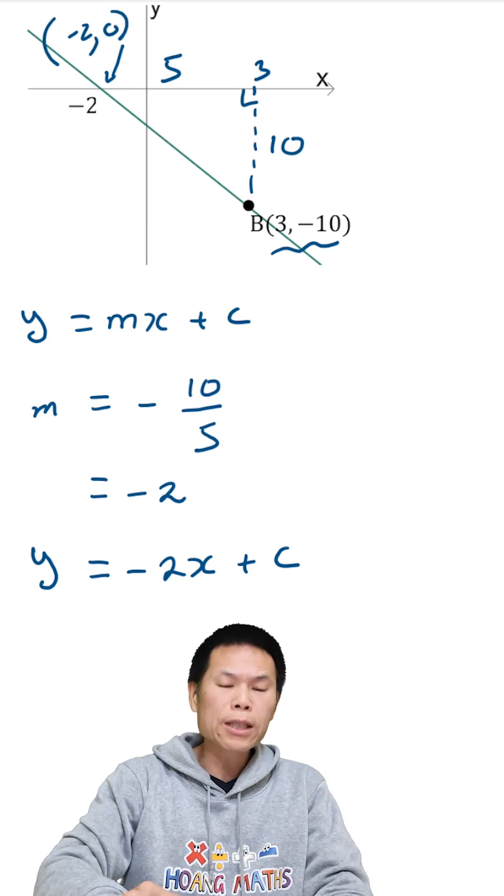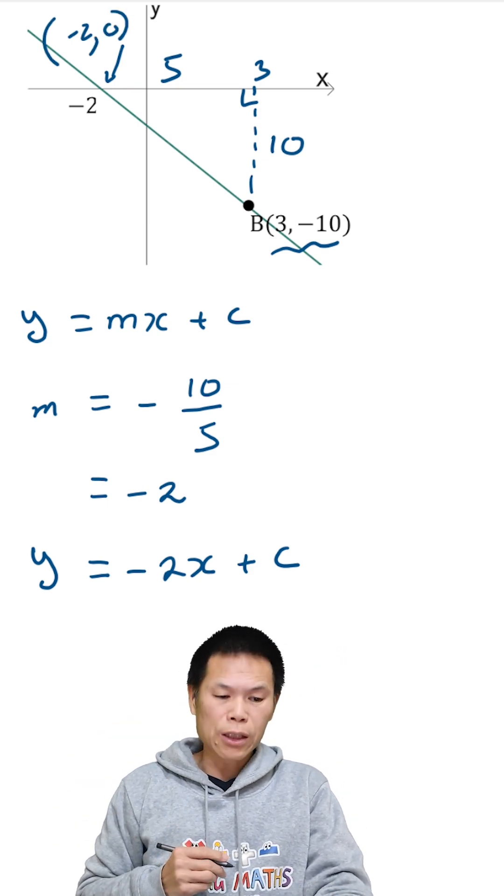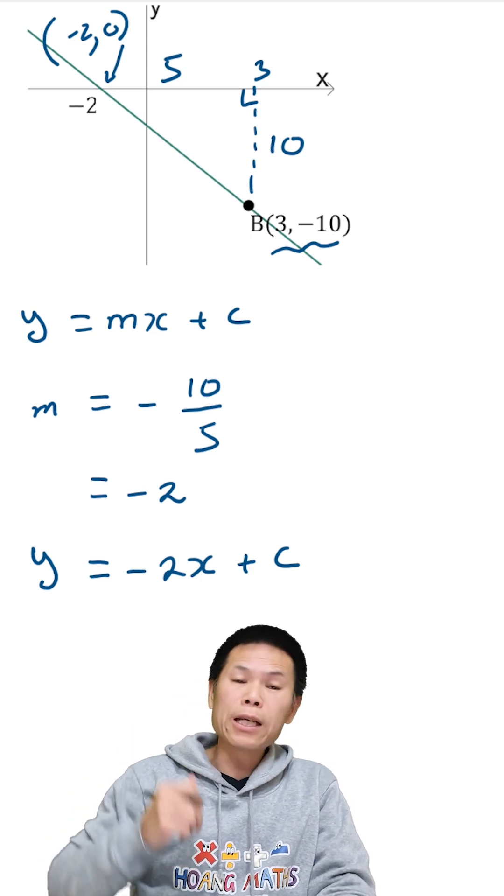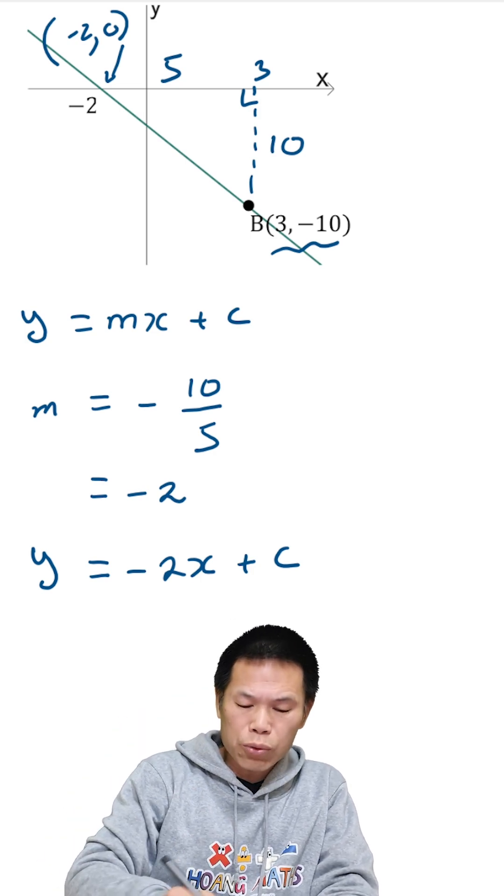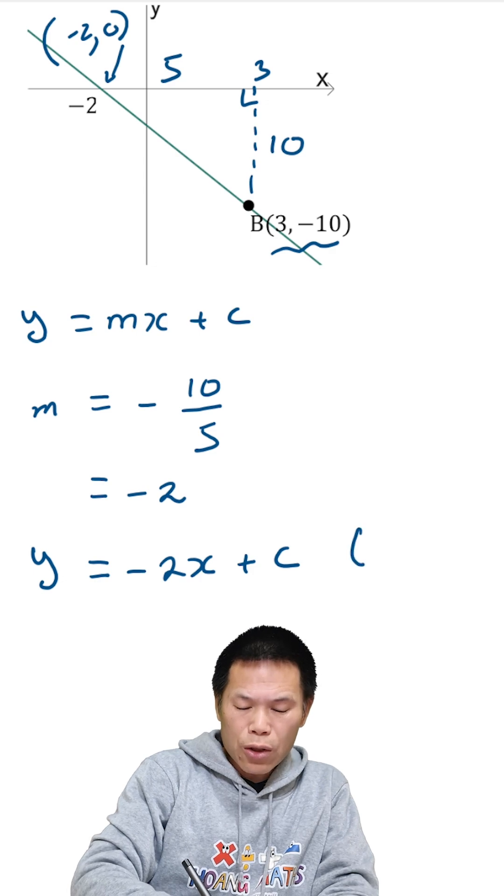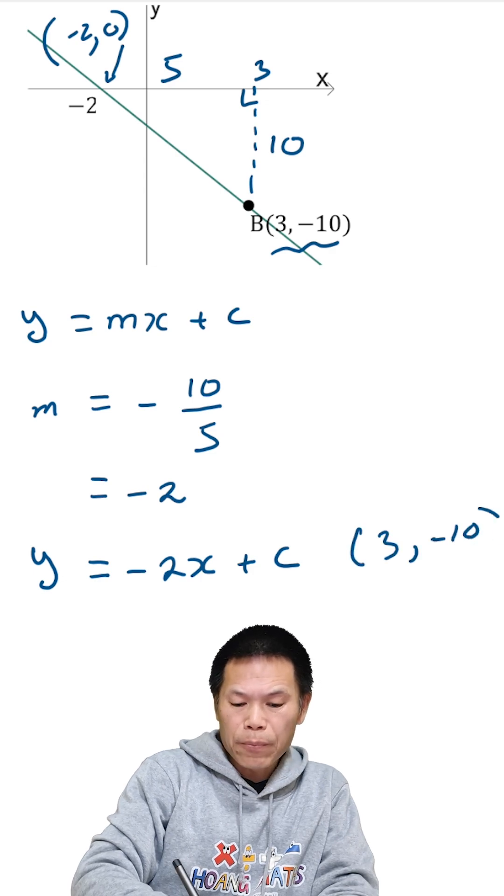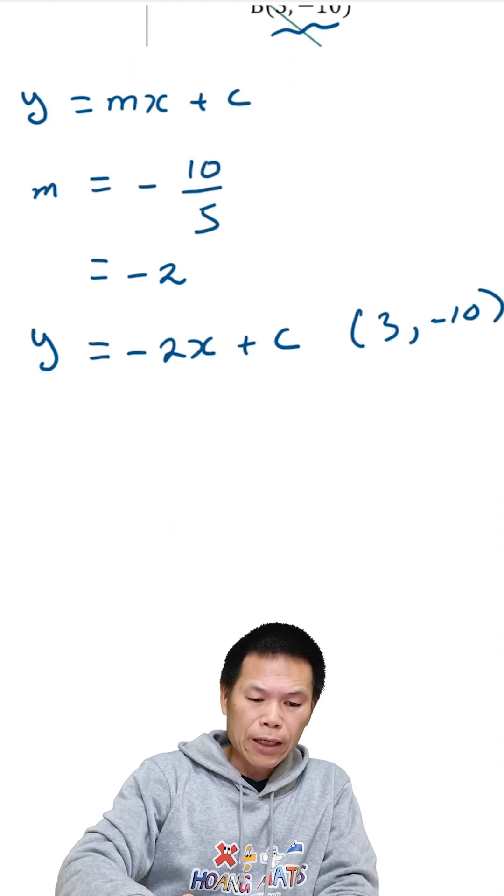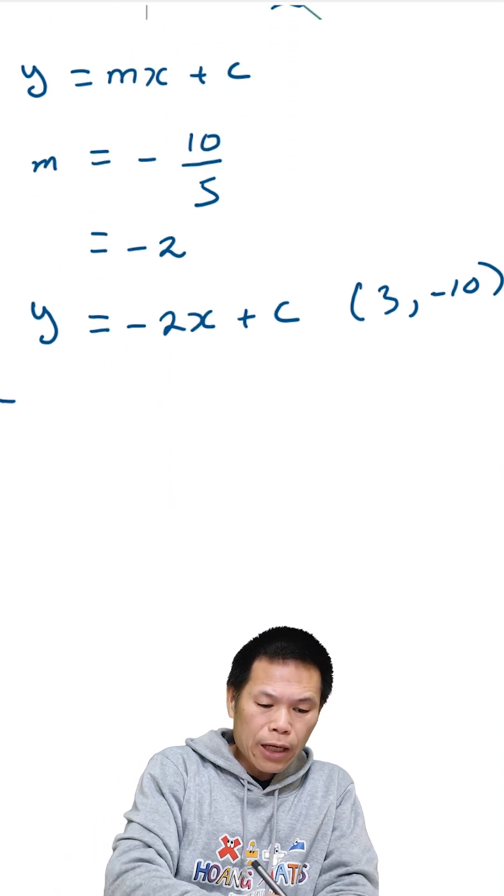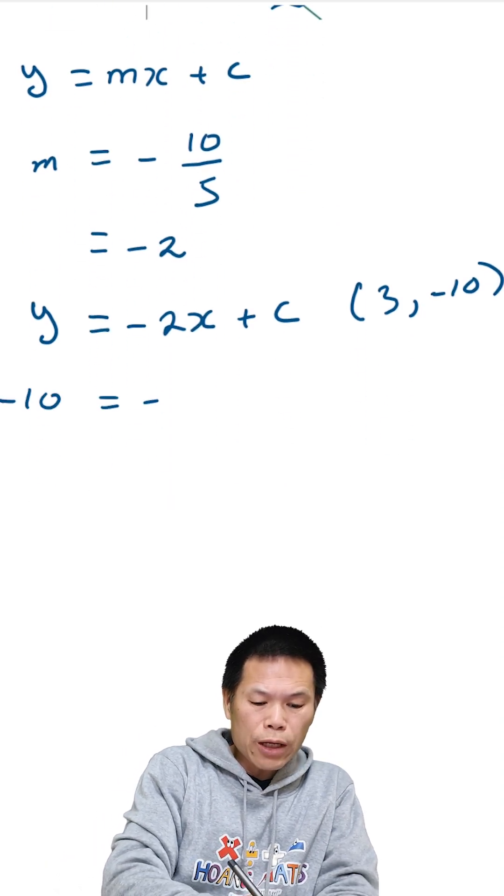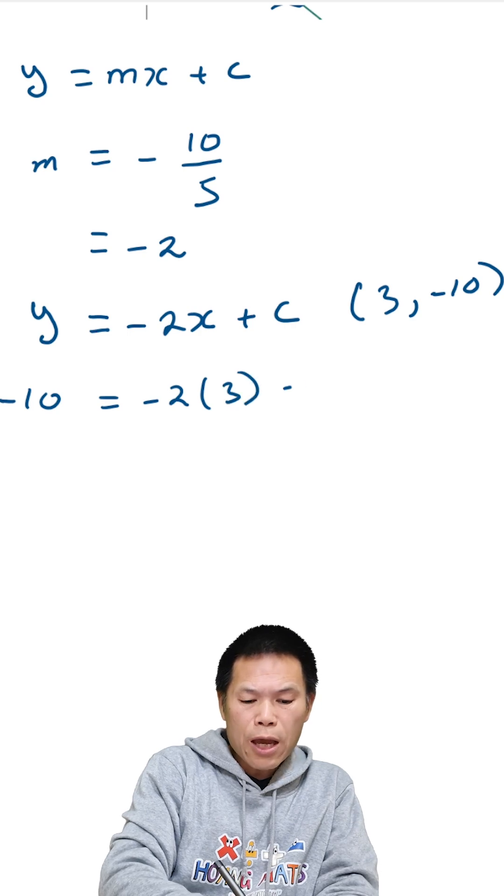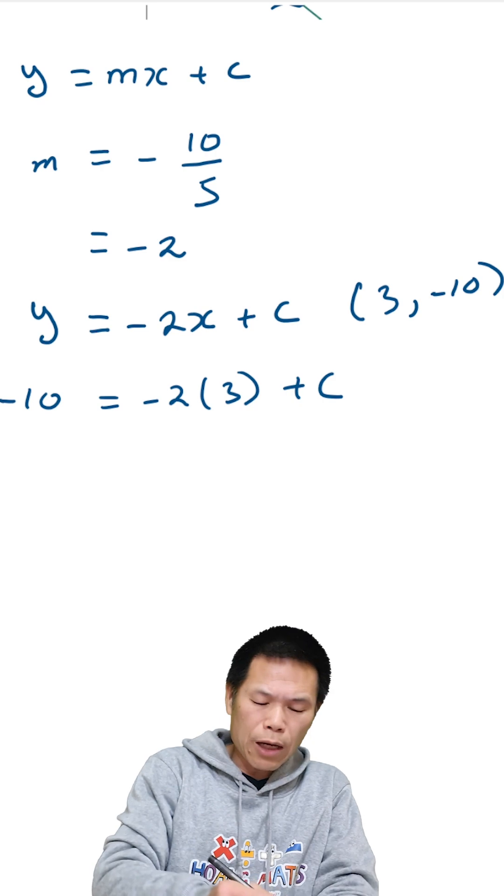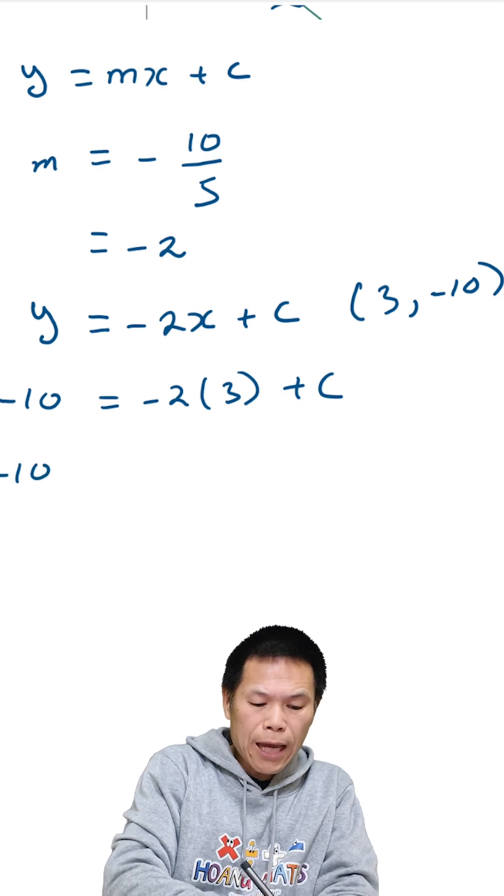Either one of this point and it will give you the value of c. So let me just use 3 negative 10, okay, this time it doesn't matter what point you use. So just go 3 negative 10, so when x is 3, y is negative 10. But that is negative 10 equal negative 2 lots of 3 plus c. So 2 times 3 is 6, but then negative 2 so become negative 6.